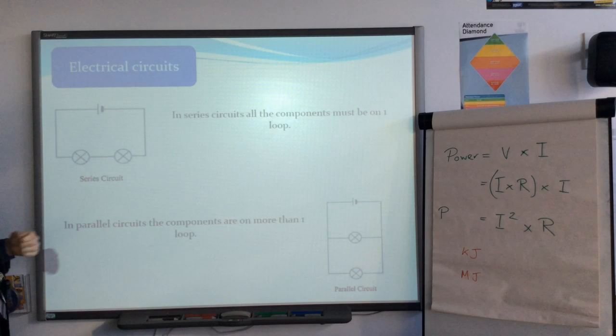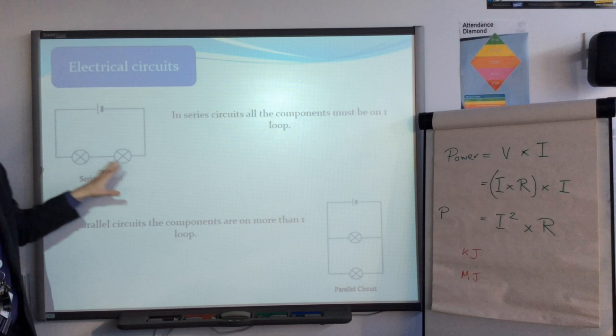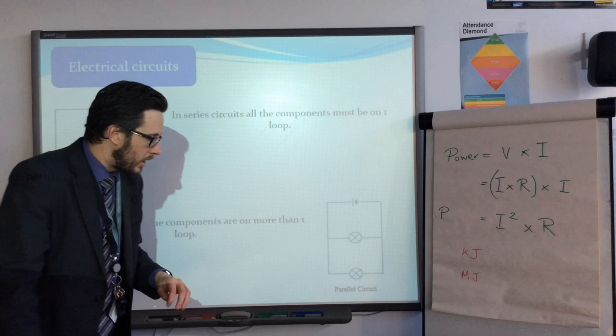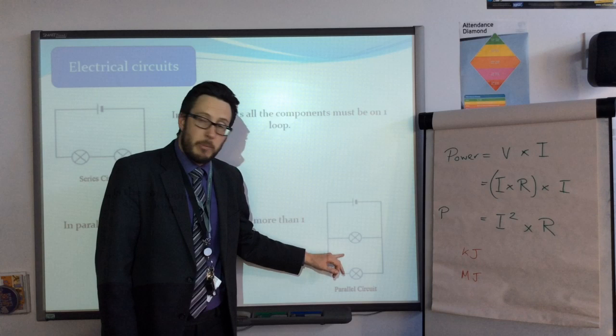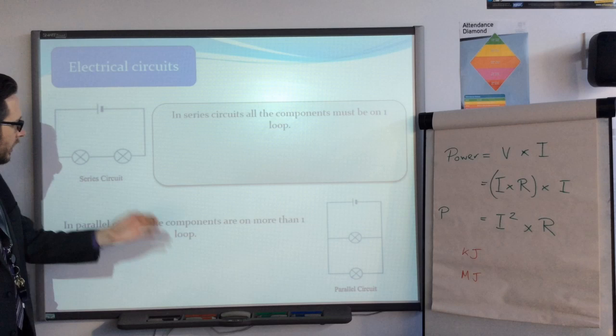Electrical circuits - I think this is a big thing. There's two types of circuit you need to know. You've got series circuits, which involve all the components being on one loop. In this case we have two identical light bulbs and just a cell on a loop. Parallel circuits have components on more than one loop. I've shown a parallel circuit with two loops here but that could be three or four loops as well. It doesn't matter as long as it's got more than one loop.